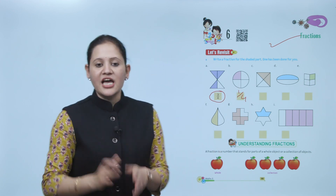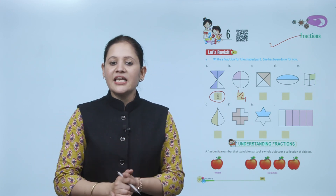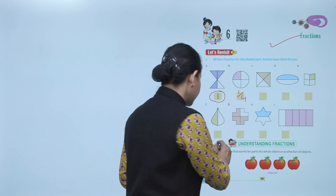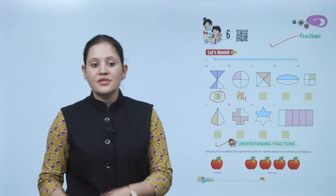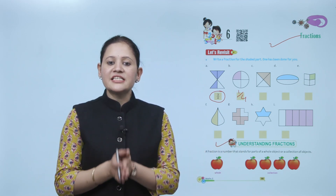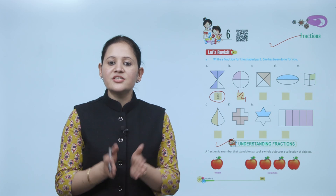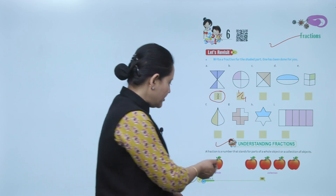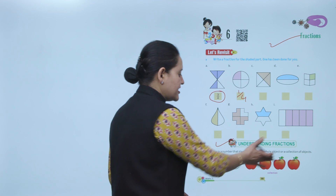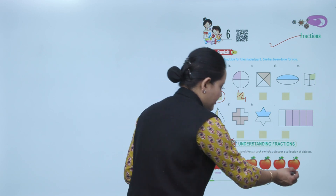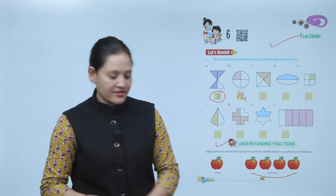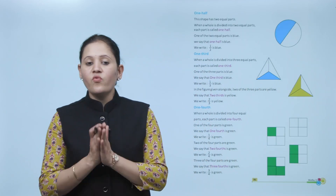Next is understanding fractions. A fraction is a number that stands for the parts of the whole object or the collection of objects. Here is the whole, and this is the collection — total 4 apples, so this is a collection.